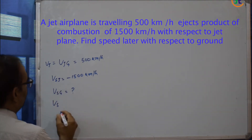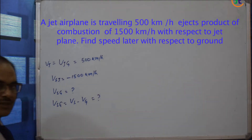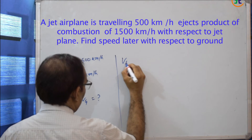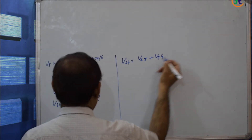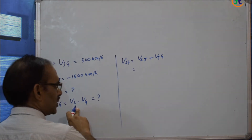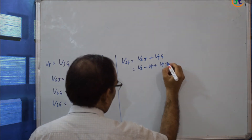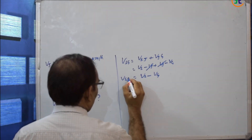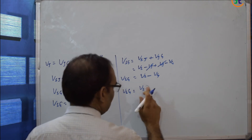We have to find the speed of the smoke with respect to the ground. The velocity of smoke with respect to the ground equals the velocity of smoke with respect to the jet plane plus the velocity of the jet plane with respect to the ground. This is derived from the relative velocity formula where intermediate terms cancel out, giving us velocity of smoke minus velocity of ground.